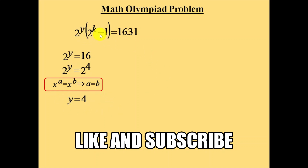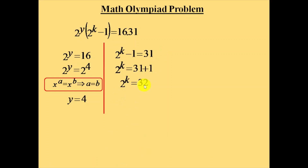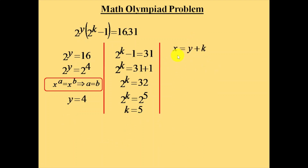Now take the other part: 2 power k minus 1 is equal to 31. So 2 power k is equal to 32, and 32 is 2 power 5. Since the bases are equal, k is equal to 5. We now know y equals 4 and k equals 5. Since x equals y plus k, substituting gives x equals 4 plus 5, so x is equal to 9.